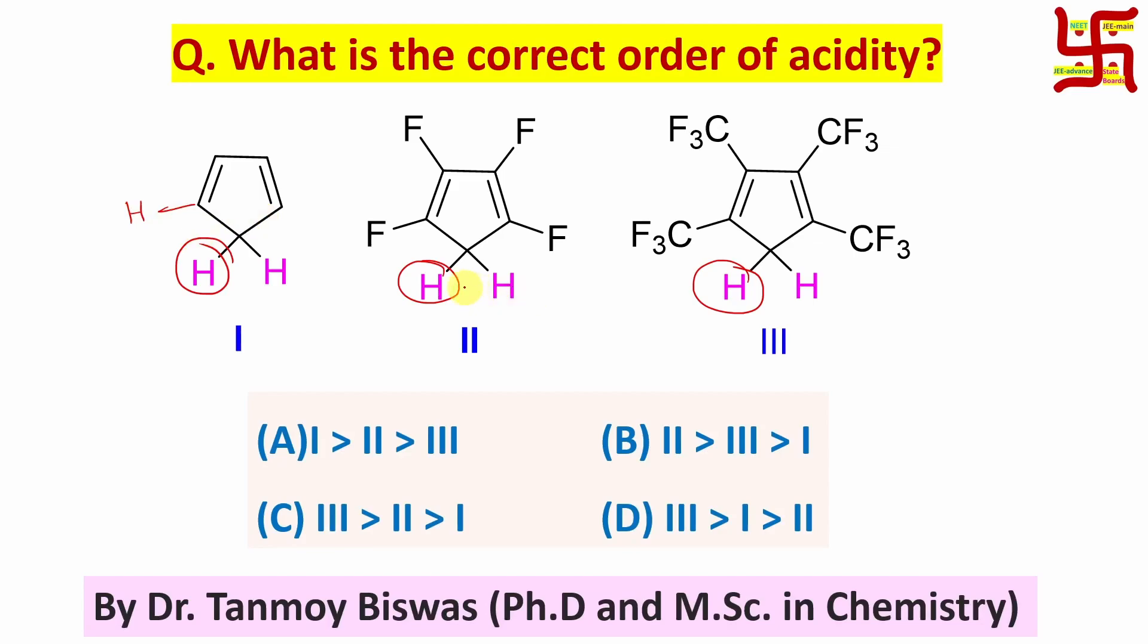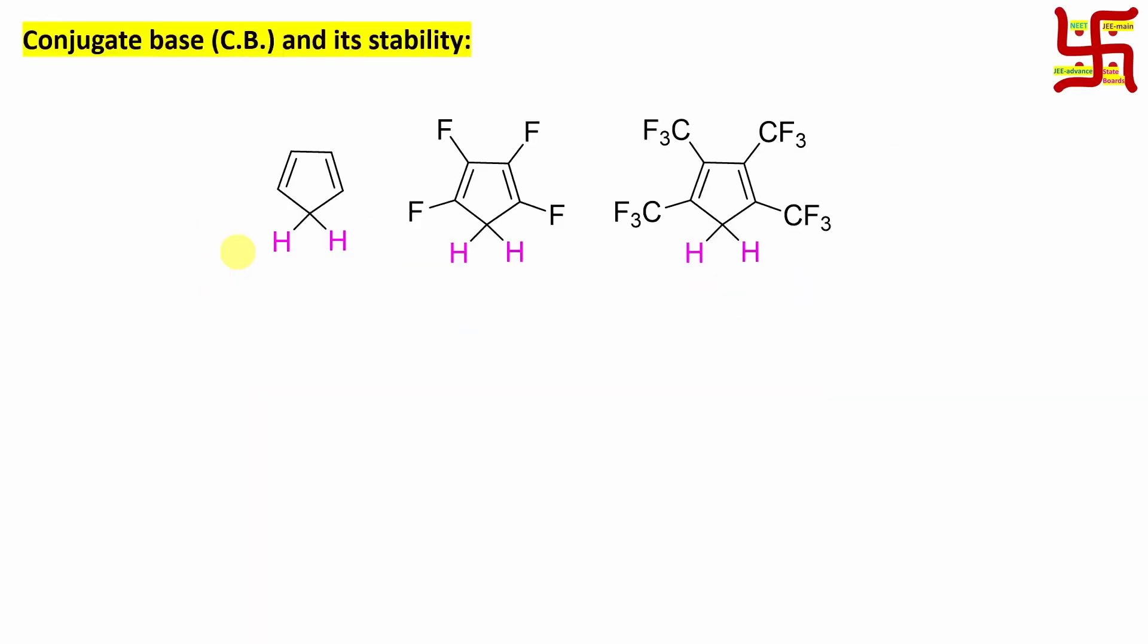Now, simple thing. If I am removing a proton, whatever negative charge is remaining, that's called conjugate base. So its stability is the deciding factor. And remember one thing more: the stability of the conjugate base, higher is the acidity.